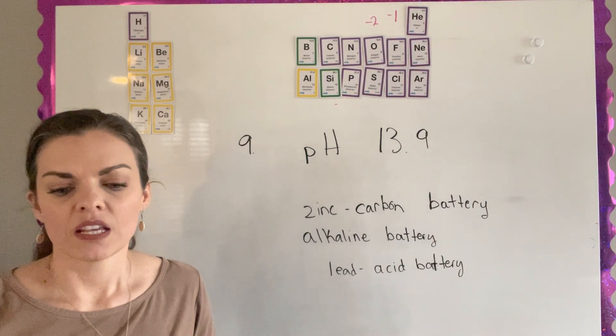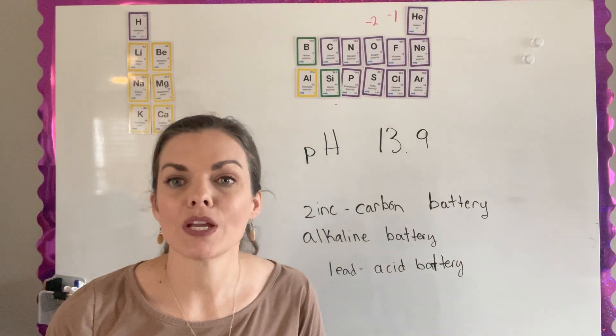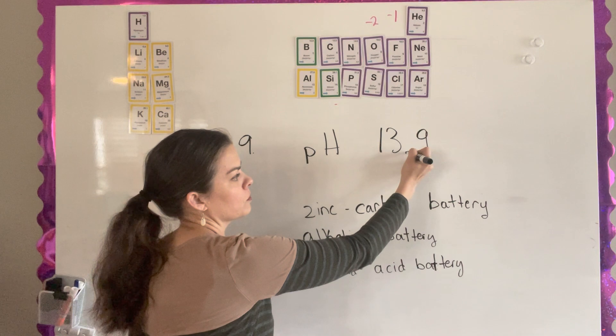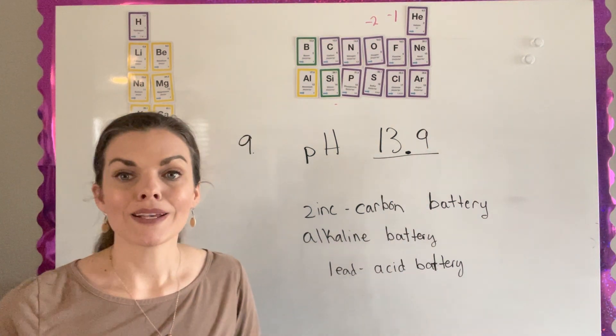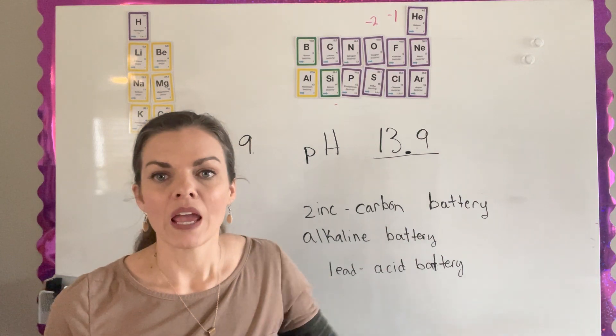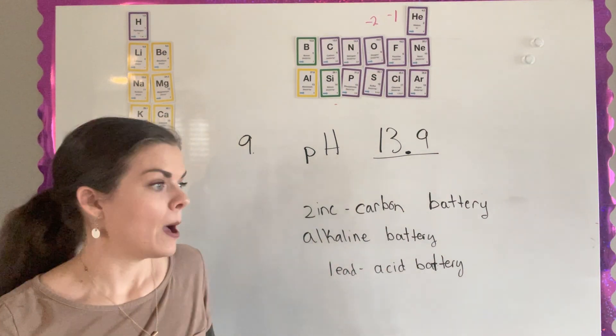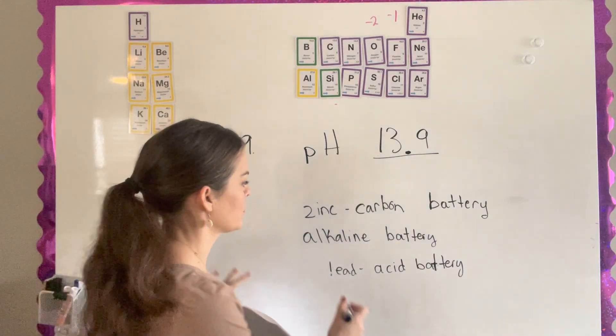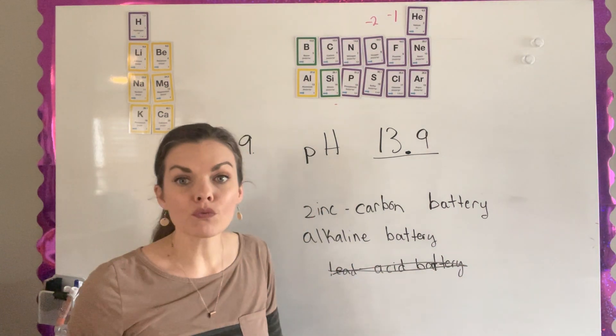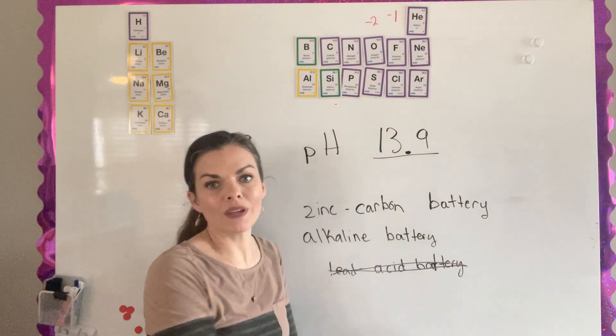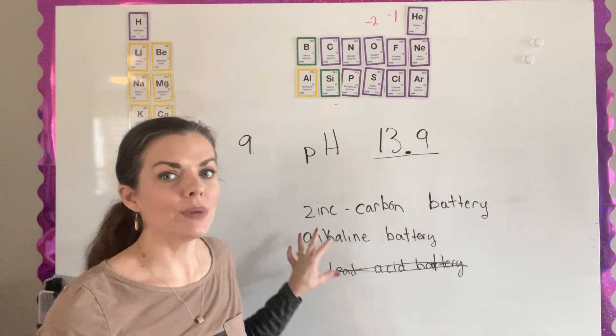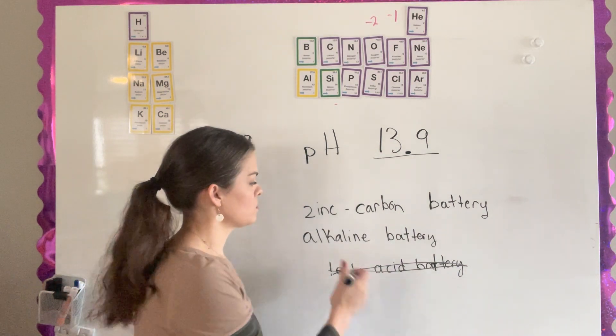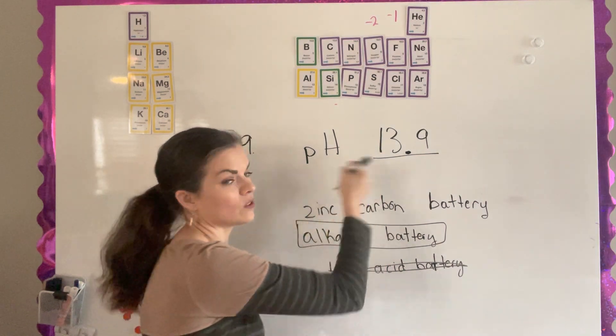Question number nine tells us the inside of a dry cell battery has the pH of 13.9. Which type of battery is it? And so if you'll remember from last chapter, 13.9 is on the basic end of the pH scale. And so I can actually eliminate some of these really quickly. If I'm looking for something that's basic, I'm going to make a good guess that it's not an acid battery. And if you know from the reading, but you may not know, zinc carbon actually has an acidic salt bridge to it. But alkaline is another name for basic, which you may be familiar with. But this basically means basic. So this is going to be an alkaline battery.